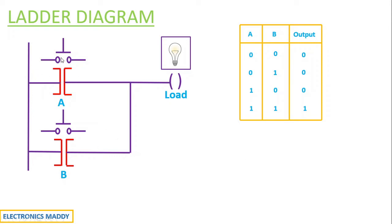That is, only when the push button is pressed, consequently the coil will be energized and acts as a short circuit and the light load will glow. Let us consider the first case where I am not pressing both the push buttons, and the output will be equal to zero in this particular fashion.